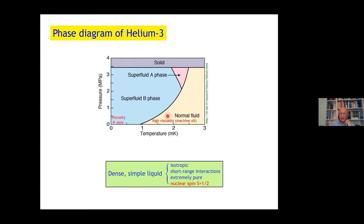I should remind you that just above the transition, normal fluid helium-3 is a highly viscous liquid. It has the viscosity of machine oil. And then abruptly, as we cross into the B phase, the viscosity goes to zero exponentially.